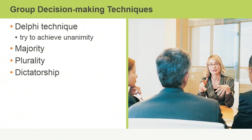Another important class of techniques are group decision-making techniques, which are used to decide on the final list of requirements once they are all collected. Examples include the Delphi technique, if you want to maintain anonymity of the participants and repeat rounds of voting to try to achieve agreement. There is also majority vote, where a consensus of 50% or more is achieved; plurality, where the largest block in a group decides; and dictatorship, where one group member makes the final decision.